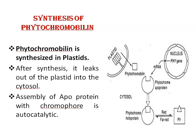Next is the synthesis of phytochromobilin. Phytochromobilin is synthesized in the plastid. Phytochrome apoprotein alone cannot absorb red or far-red light — light can be absorbed only when the polypeptide is covalently linked with phytochromobilin to form the holoprotein. After synthesis, phytochromobilin leaks out of the plastid into the cytosol, where it assembles with phytochrome apoprotein to form a complete holoprotein. The assembly of apoprotein with chromophore is autocatalytic.